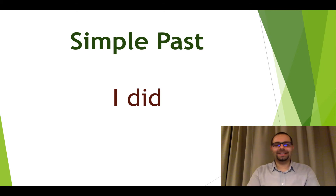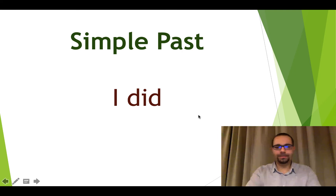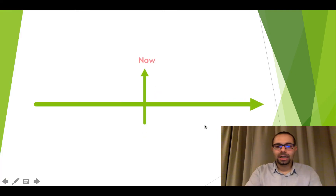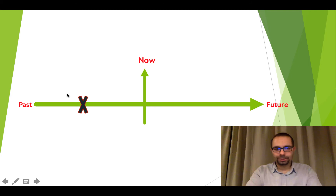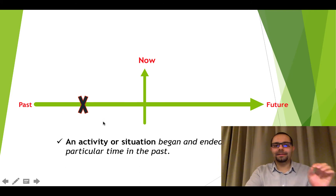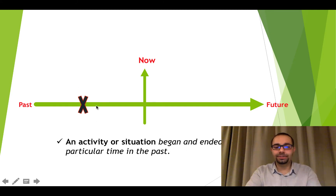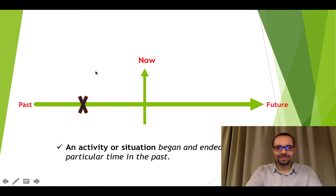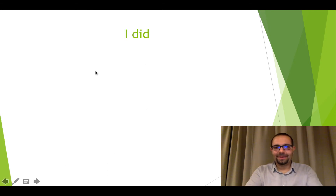Hello everybody, I hope all of you are fine. In this video I'm trying to focus on simple past tense. As you see, I'm using the main verb 'do' — the past form of 'do' is 'did.' This is our timeline; it shows now, future, and past. It is very important to see that we use simple past when we want to talk about an activity or situation which began and ended at a particular time in the past.